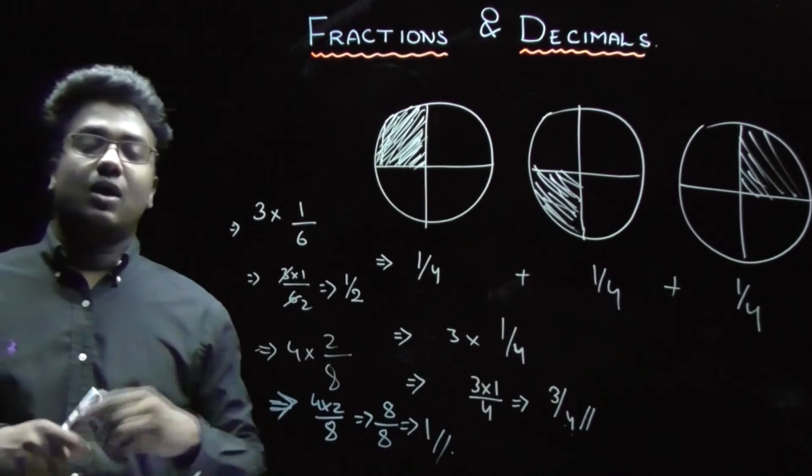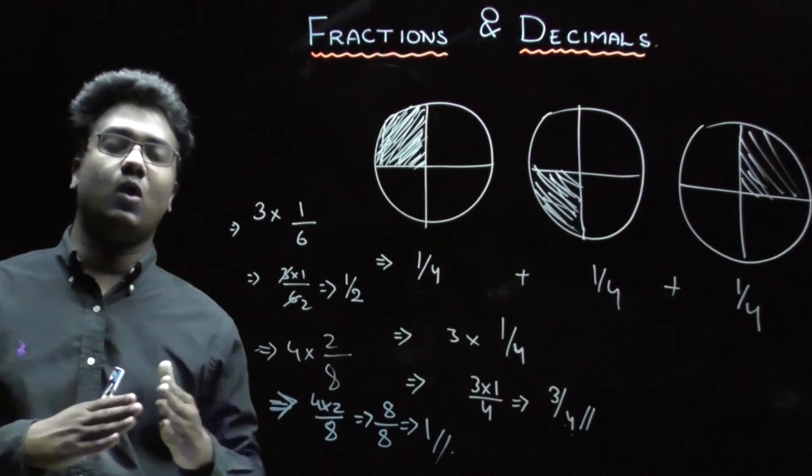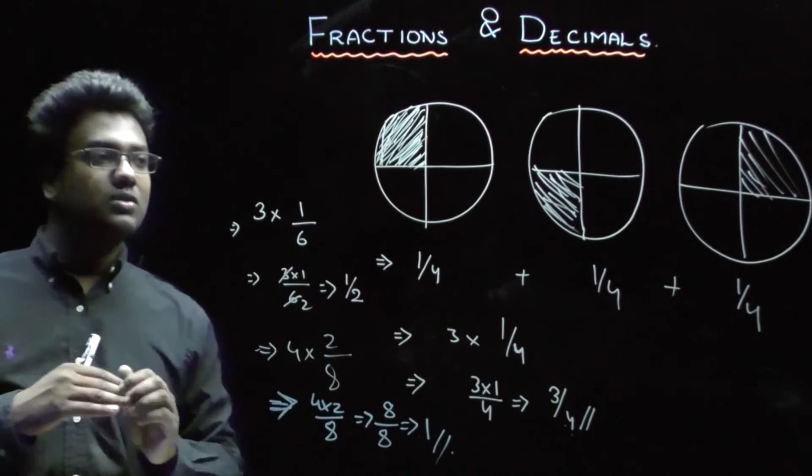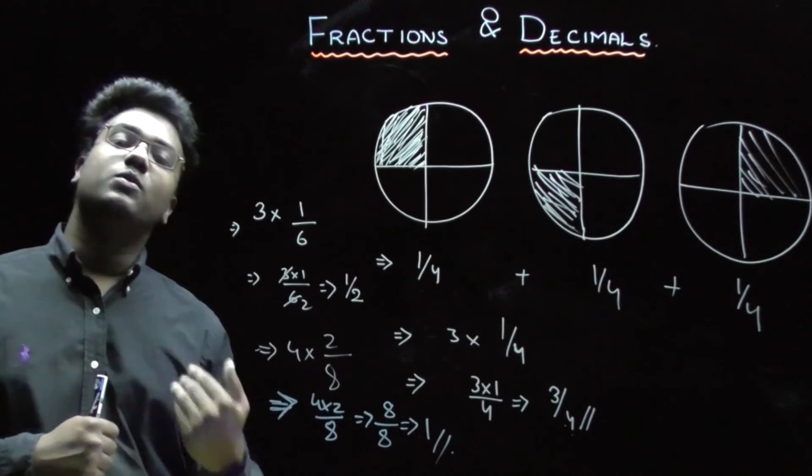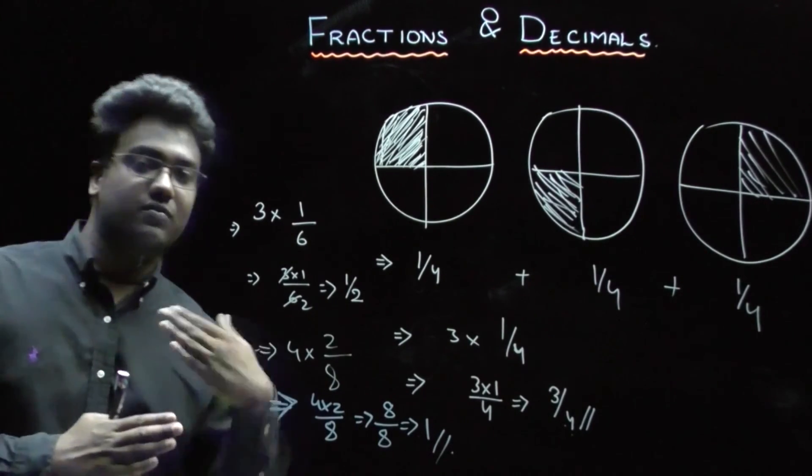So, in this pattern, the whole numbers are generally multiplied with fractions. The numerator of the fraction will be always multiplied with the whole number. This is all about the multiplication of fractions with whole numbers. Now, let us discuss the multiplication of fractions with another fraction.